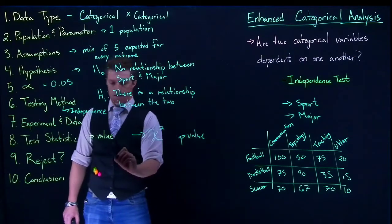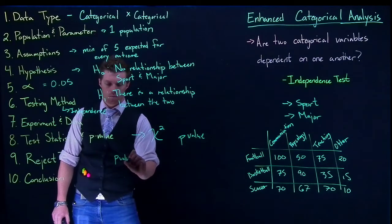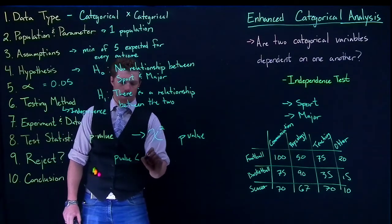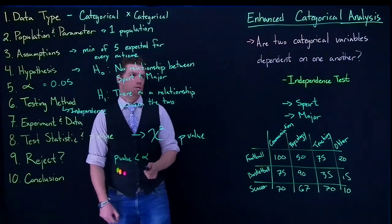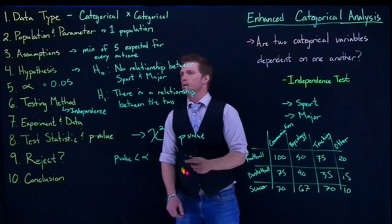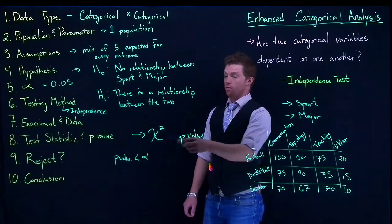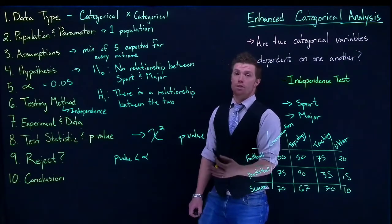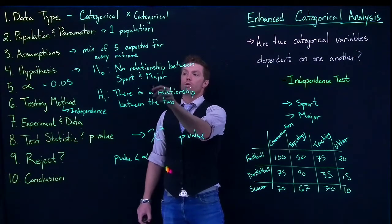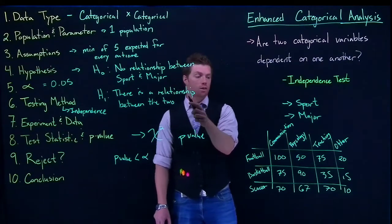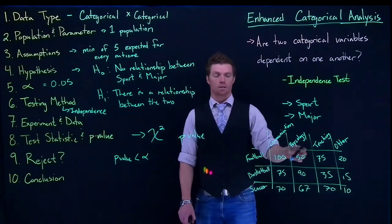We reject if our p-value is less than alpha. Our conclusion: if we reject, we collected sufficient evidence to reject the claim that there's no relationship between the two, suggesting there is a relationship.